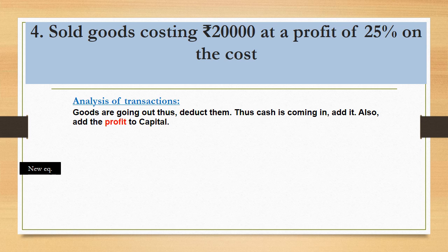Next, sold goods costing 20,000 at a profit of 25% on cost. Jab bhi hum profit pe goods bechenge, profit bhi owner rakhega. This transaction creates 3 effects. First effect: we realize cash of rupees 25,000, which is 20,000 plus 25% of 20,000. After realizing cash, we must consider the reduction in stock — jo stock ja raha hai uska worth hai 20,000.